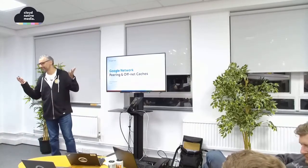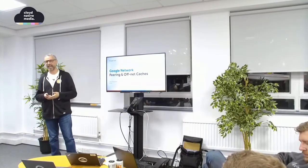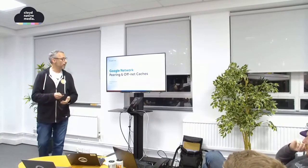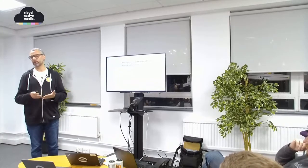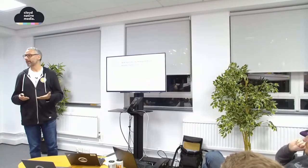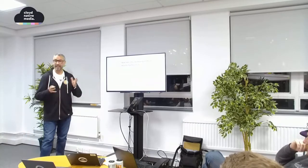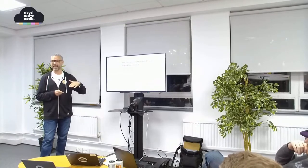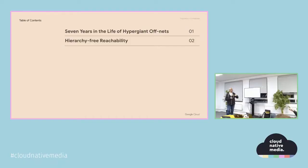I'm more in the OTT digital end, so the network and off-net caches are more about HTTP streaming — HLS, DASH — and at scale. As I went through various material, I found myself referring to a couple of interesting papers. There are two papers: one is called 'Seven Years in the Life of Hypergiant Off-net.'